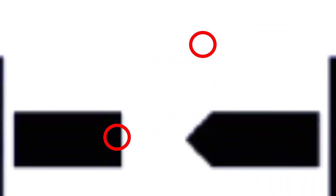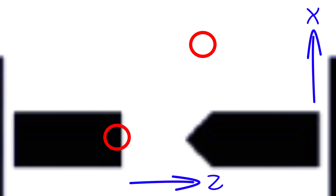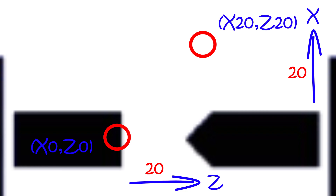Let us consider the case of a CNC turning machine. Let's say we have two positions in a machine. As we know that CNC turning is a two-axis machine, this direction is X and this direction is Z. The coordinate for the first position is 0,0. The second position is 20 mm towards the right and 20 mm above, so the coordinate for the second position will be 20,20. Let's consider that the tool is currently at position 0,0 and we need to move the tool to the second position, that is 20,20.